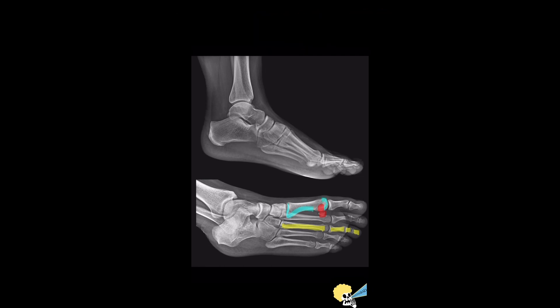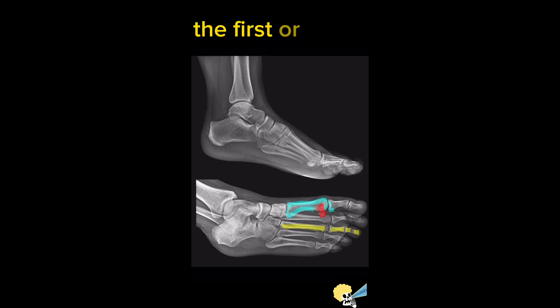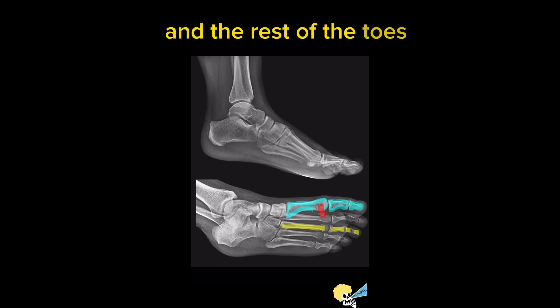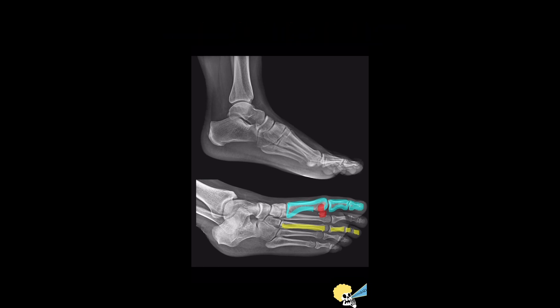In the foot, the first or big toe is called the hallux, and the rest of the toes are called the lesser toes.